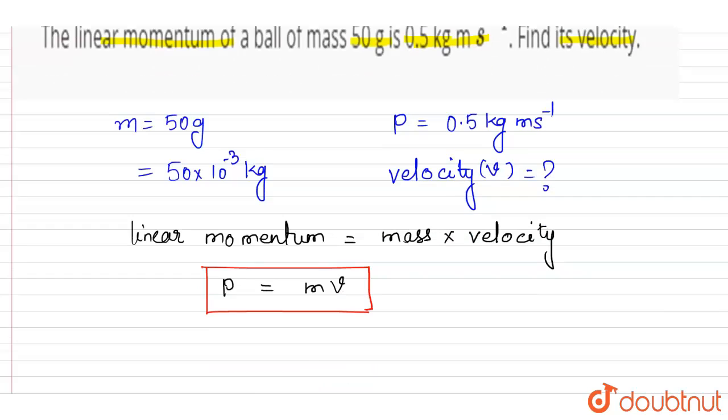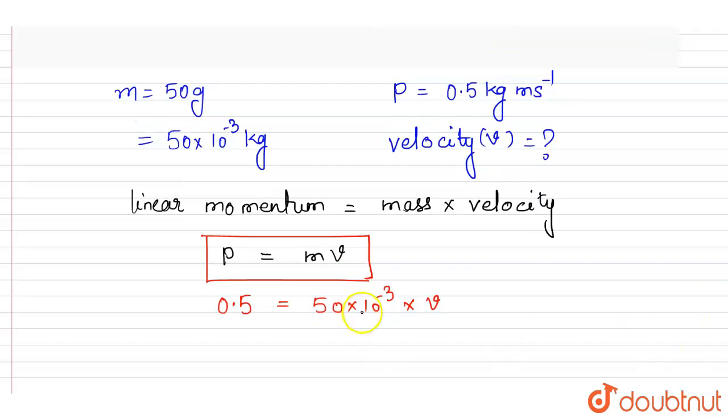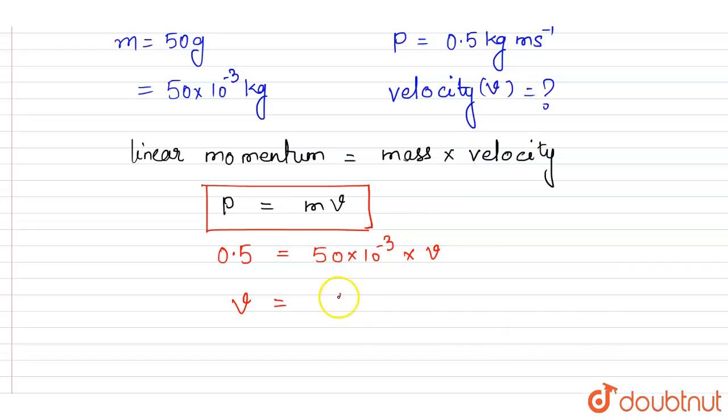This is the formula to find p, that is momentum, linear momentum, that is equal to m into v. Now put the value of p here. P is 0.5 kg meter per second is equal to mass, mass is 50 into 10 to the power minus 3 into velocity v.